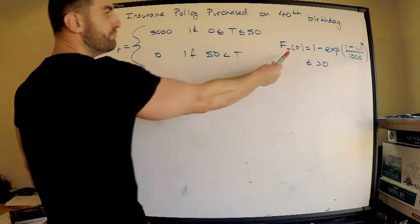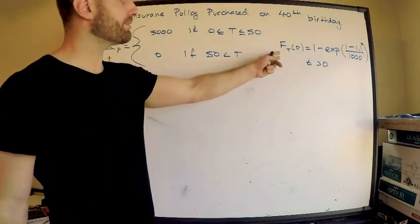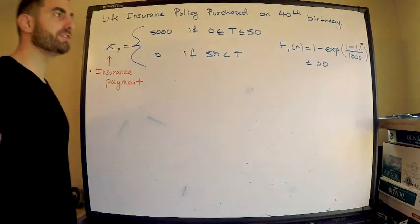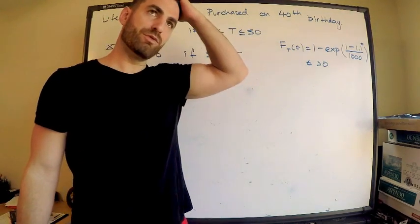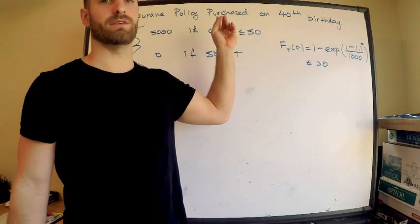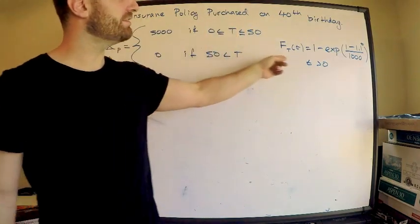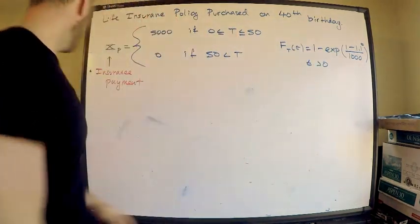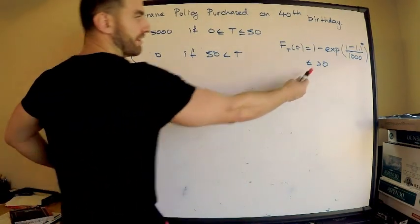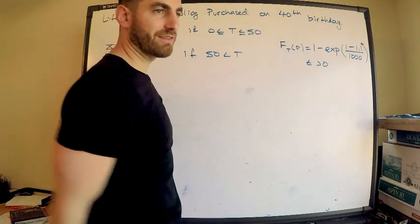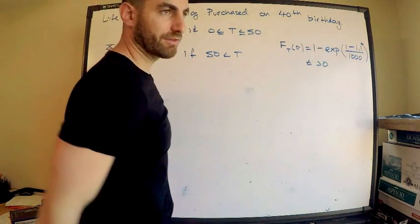The payment is equal to 5,000 if he dies before he's 50, and it's equal to nothing if he lives past 50. So I'm not going to go into anything there, but that's the situation. We're also given a cumulative, a CDF, right, this is capital F, the cumulative distribution function for his lifetime. This is the lifetime of a man who was born the same year as this individual, right, because he's 40 now.